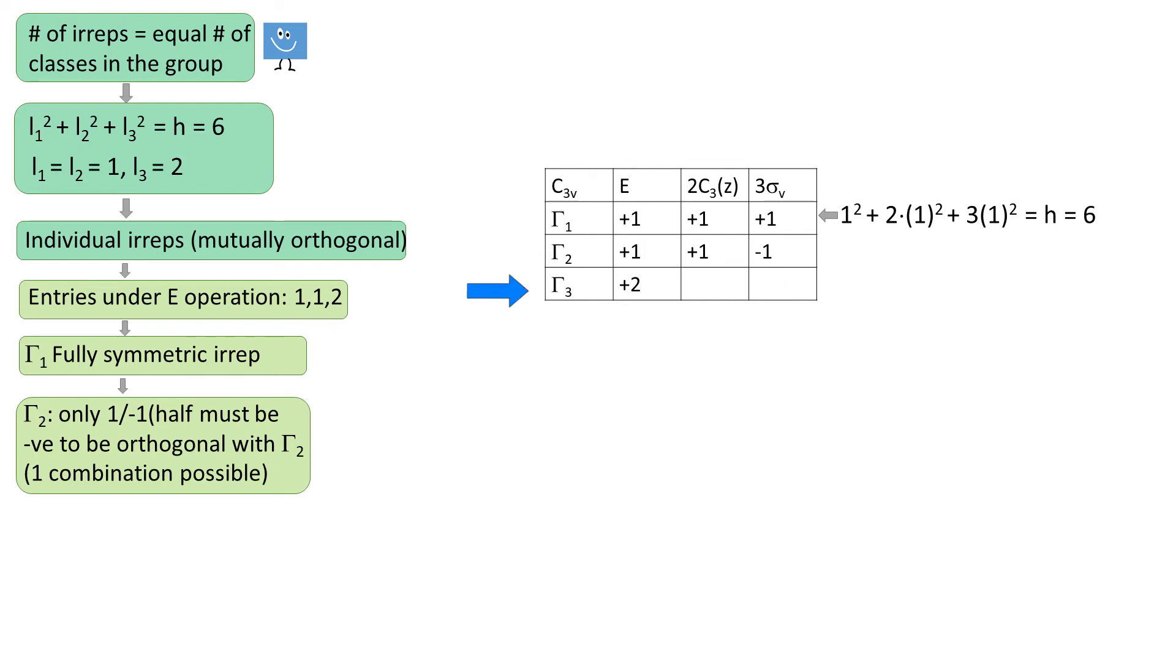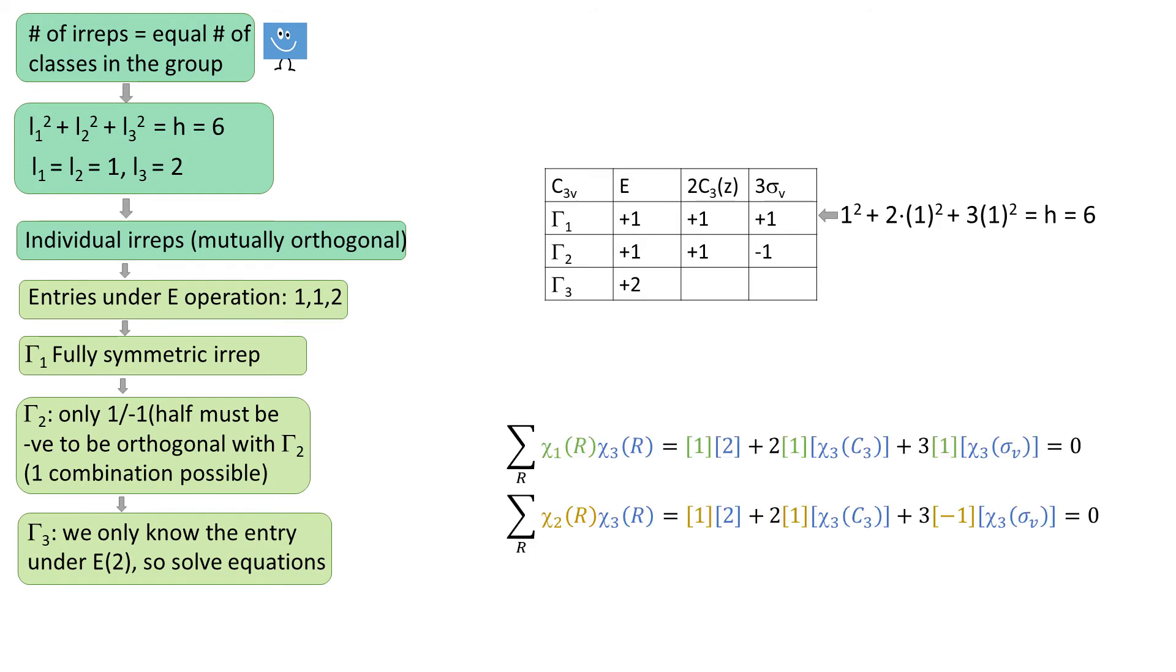So let's crack tau3. We missed 2 entries, but we can figure them out by setting 2 equations. We know that the dot product of the vector 1 with 3 is 0 and the vector 2 with 3 is also 0.